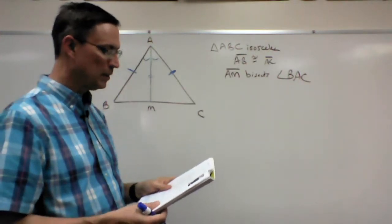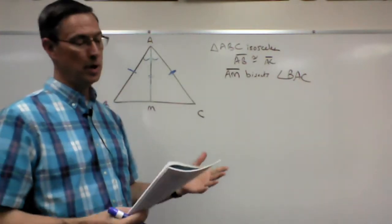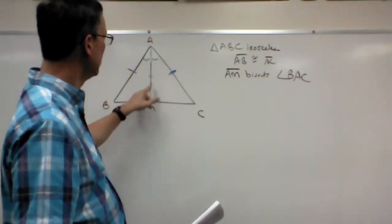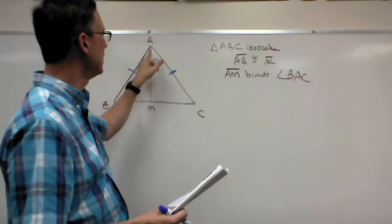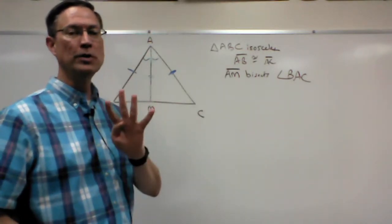Now, they make the statement for, therefore, triangle BAM, okay? So this triangle is congruent to triangle CAM, this triangle. Now we're going to use one of those four choices, remember?